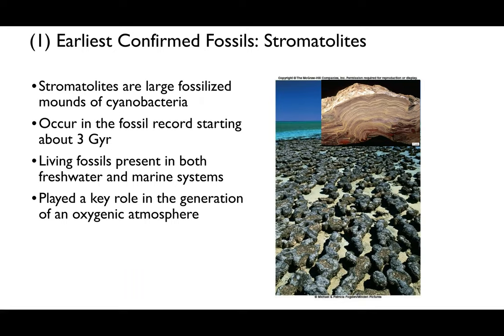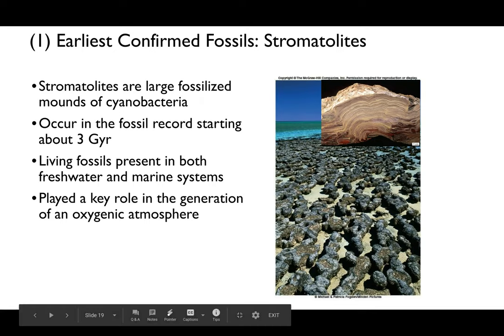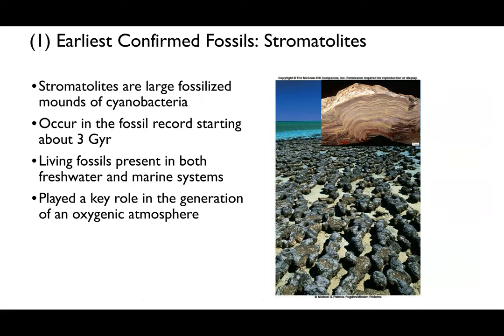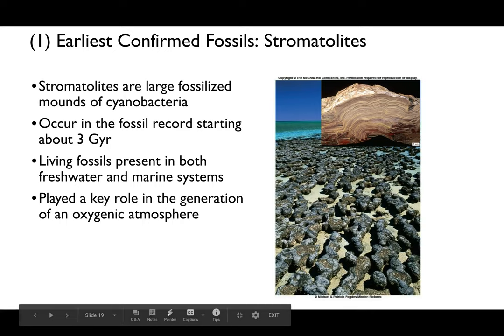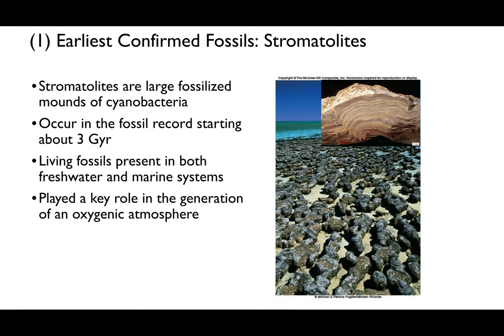The best fossilized remains of microbes are what we call stromatolites, which still exist in modern times. We see them in the fossil record and in modern environments, providing a good linkage between past and present. Stromatolites in ancient times were large fossilized mounds of cyanobacteria—our photosynthetic bacteria. The earliest evidence for stromatolites occurs about three billion years ago, earlier than the very first bacterial microfossils. They are found in freshwater and marine environments today and likely played a key role in generating oxygen in our atmosphere, since early Earth was completely anaerobic.